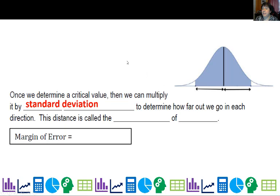So once we've determined a critical value, then we can multiply it by its standard deviation to determine how far we're going to go out in each direction. And this distance is called the margin of error. So you have a margin of error here, and you have a margin of error here. This middle value is your point estimate, what you think the value is.